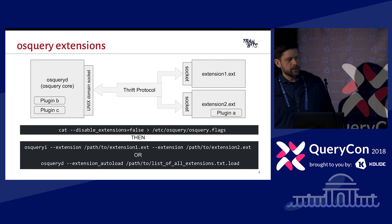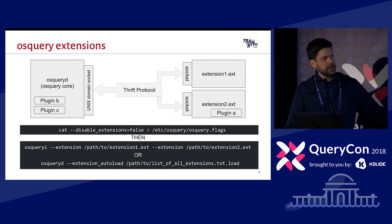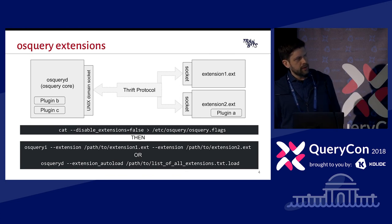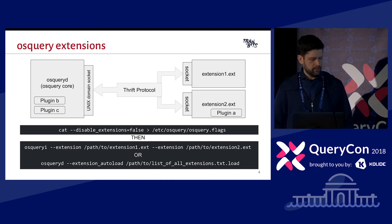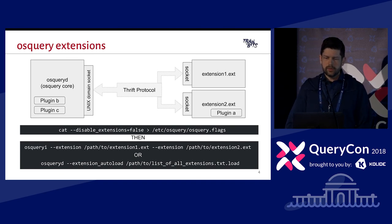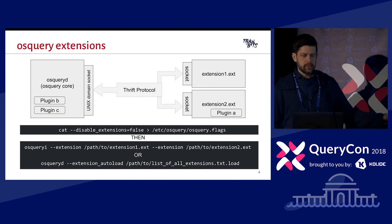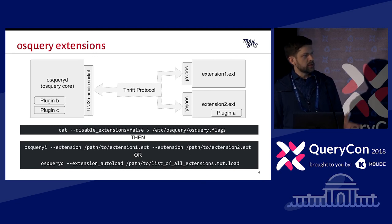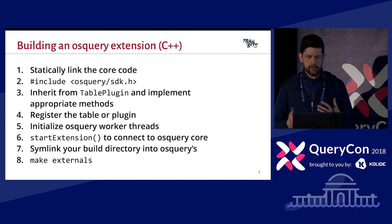I drew myself a little napkin diagram of what extensions are and how to use them. OSQuery core is on the left, and the extensions are on the right. You can have multiple extensions and they all talk over the same Thrift protocol — a one-to-many broadcast protocol. There's also a third way to load an extension on demand. Generally, all you need to know is that there's a Unix domain socket used to communicate locally on the machine.